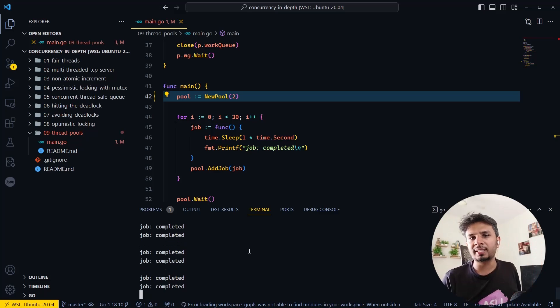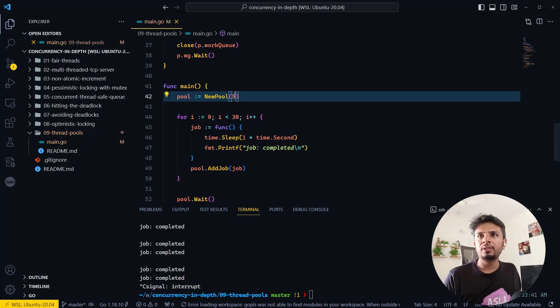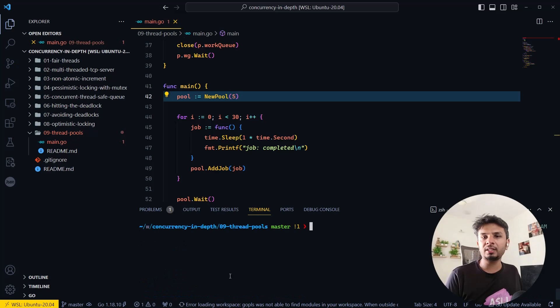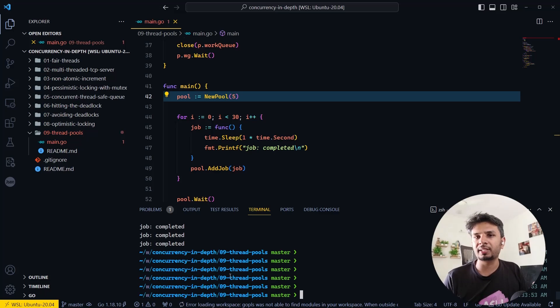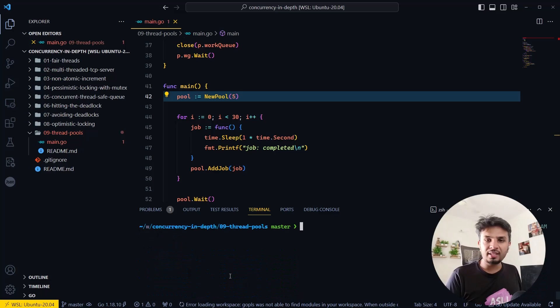Now if I change it to five, you can see that although I'm submitting 30 tasks, it will pick five at a time and complete. Other tasks are waiting to be scheduled or to be sent to this worker pool for execution.